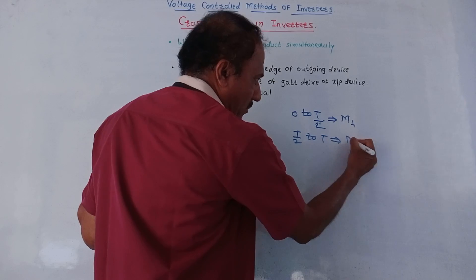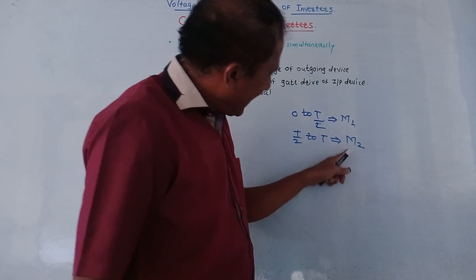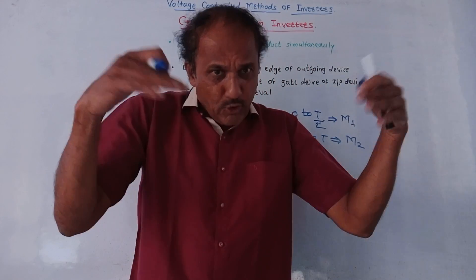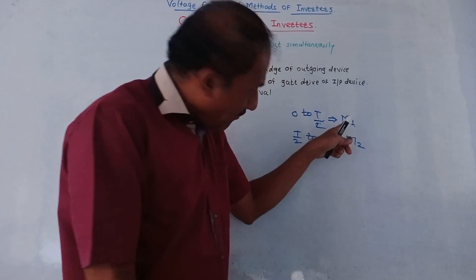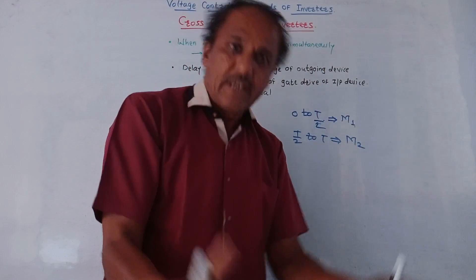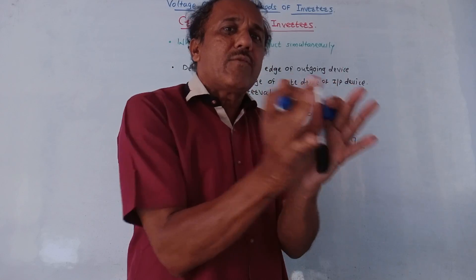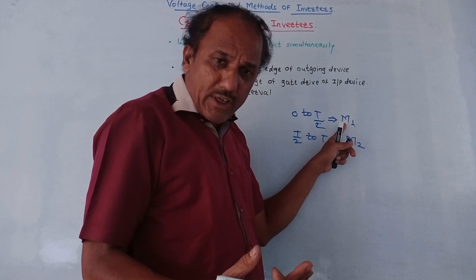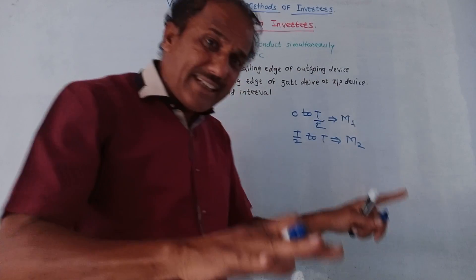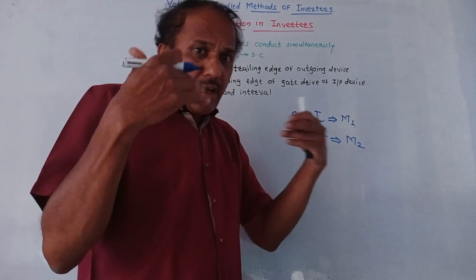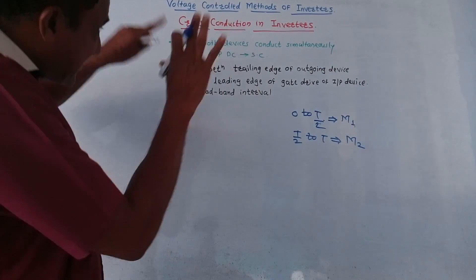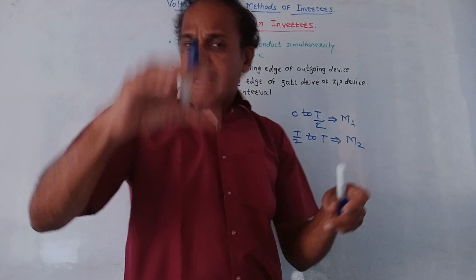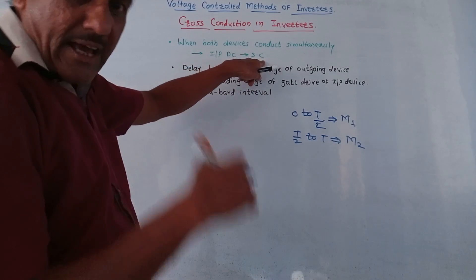When M2 is switched on, MOSFET M1 should be switched off. This is the ideal situation, but in practical cases, the switching off of a particular MOSFET is not an instantaneous action. So it may happen that you have applied a gate pulse to MOSFET M2 assuming that M1 is switched off, but M1 still remains on. Simultaneously, both MOSFET M1 and M2 may be in conduction mode for a certain time period. In such cross conduction cases, when both devices conduct simultaneously, the DC input voltage applied to the inverter gets short-circuited and it may damage the circuit.